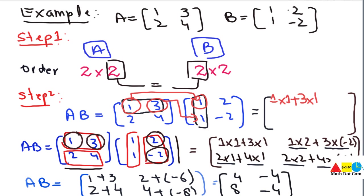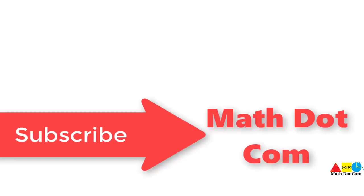That's all about the product of two matrices using the dot product method — how to identify whether two matrices are eligible to be multiplied and how to multiply them. Thank you for watching. If you like this video, please don't forget to subscribe to our channel math.com for more updates. Thank you.